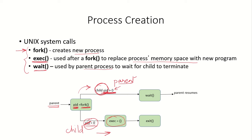The child process can replace its address space by calling exec to load a new program, or if it wants, it can continue to be a duplicate of the parent and not call exec. After the new program has run, the child will exit. The parent process, after creating the child, will wait for the child to terminate. If the parent is not waiting, it will run concurrently with the child.